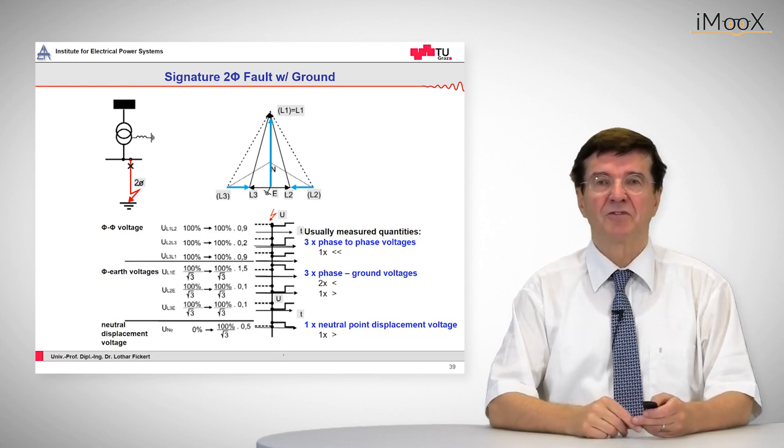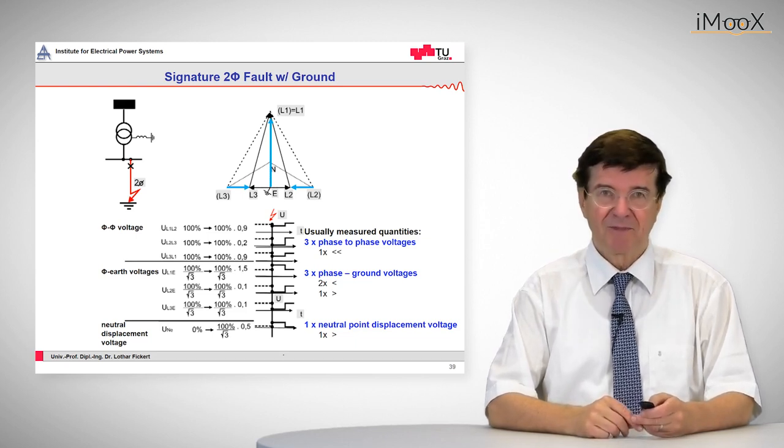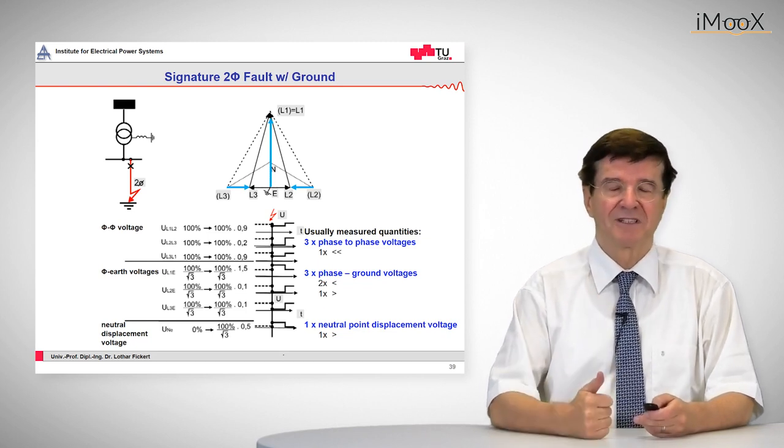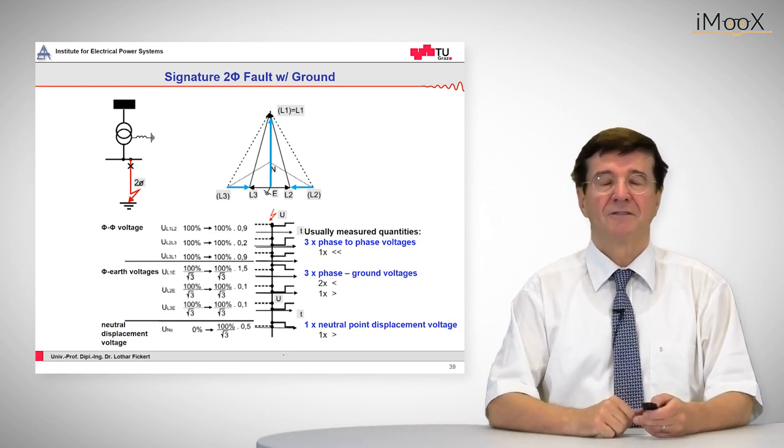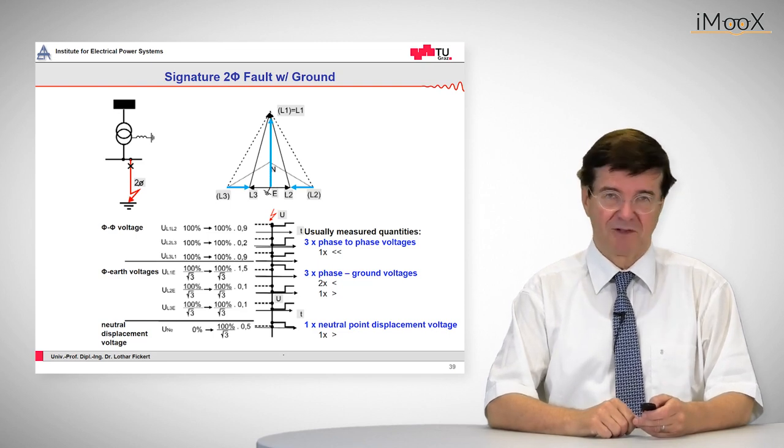which means ground is involved, we have zero sequence current flowing and from this zero sequence voltages develop.